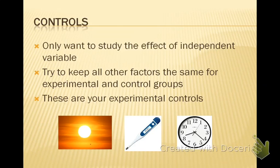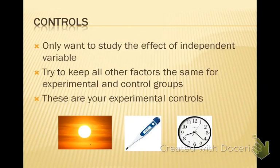You only want to study the effect of the independent variable. A good experiment only tests one variable at a time and tries to keep everything else the same — though 'tries' is the key word, because it is impossible to keep everything the same. These are your experimental controls — the things you keep the same. Some examples for Redi might have been the amount of time left in the sun, the temperature he kept the jars at, and how long he let the experiment run.